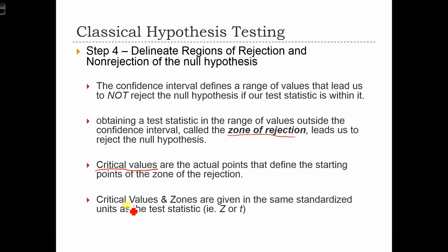The critical values and zones are given in the same standardized units as the test statistic. So the critical values are going to be z-scores or t-scores, depending on whether we are using the normal distribution or the t-distribution.